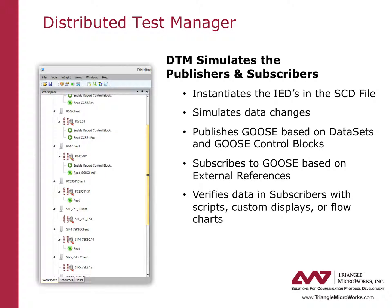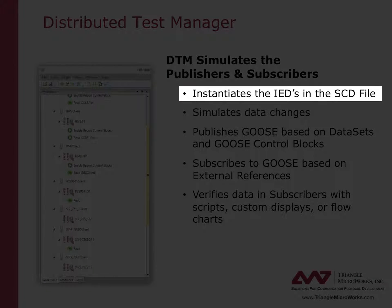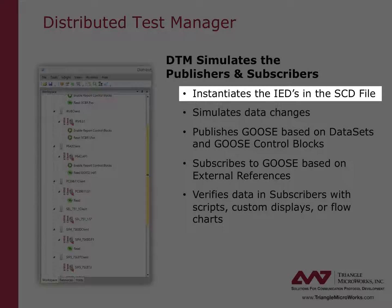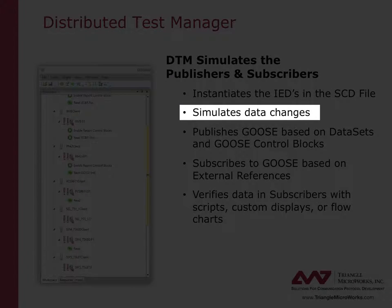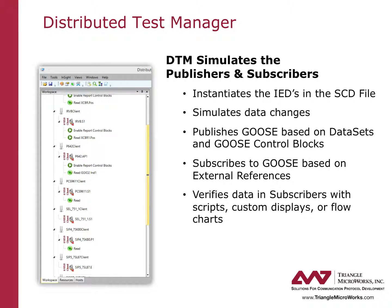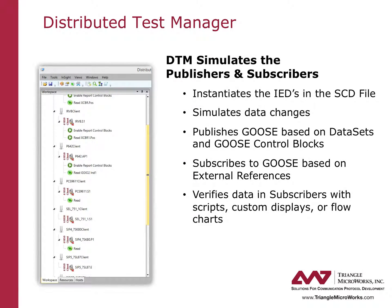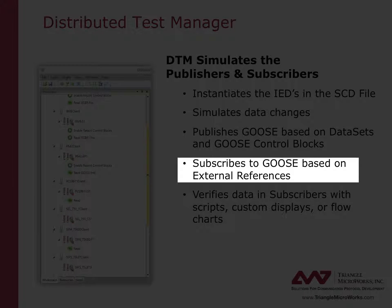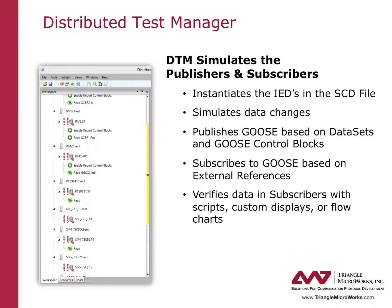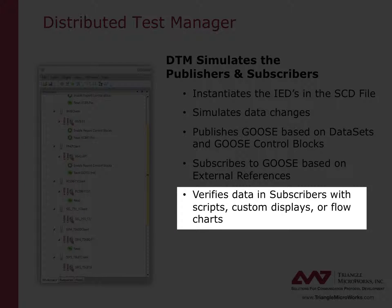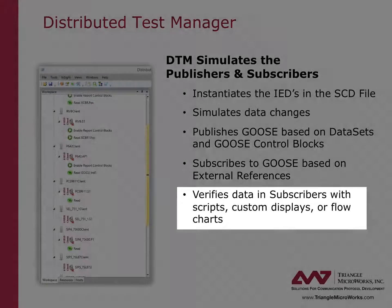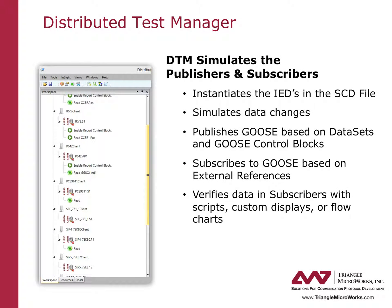Here we can walk through the GOOSE verification process. The user instantiates the relevant IEDs from the SCD file with DTM's interactive guide. The user can change data in a publisher IED through one of many different data simulation methods in DTM. When data in a publisher is changed, a GOOSE message is published if the data is part of a data set that is part of a GOOSE control block. The published GOOSE message is then received by all devices which are subscribed through external reference definitions in the input section of the SCD file. The user can then verify the data was received by the subscriber, for example by mapping GOOSE data into the subscriber IED's object model and viewing the data change directly in the IED's model.